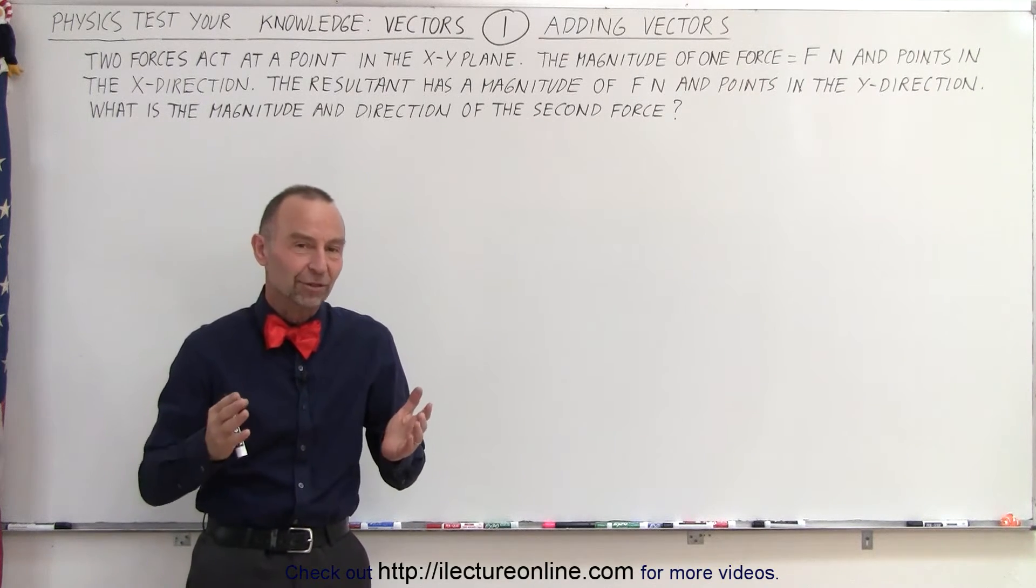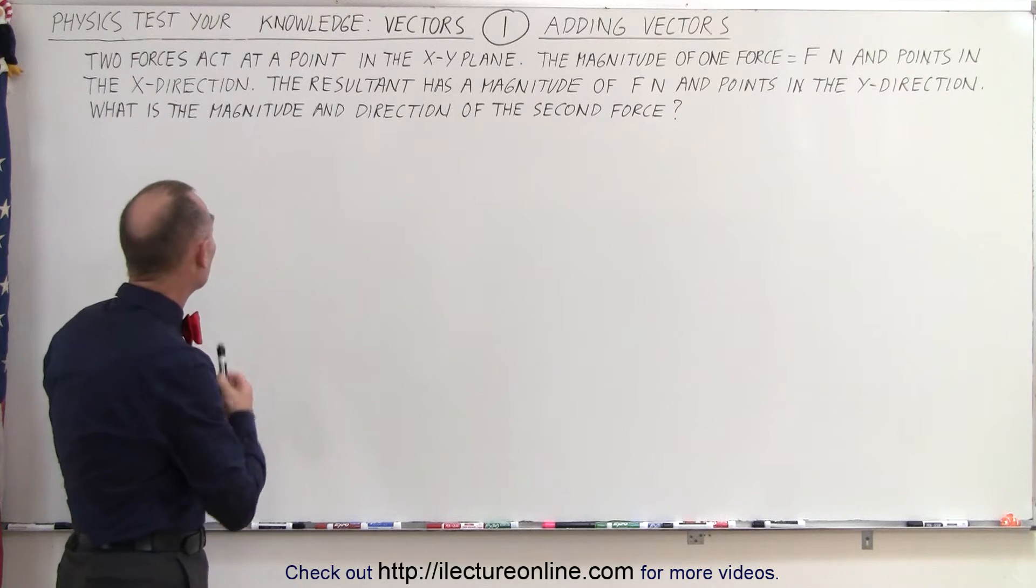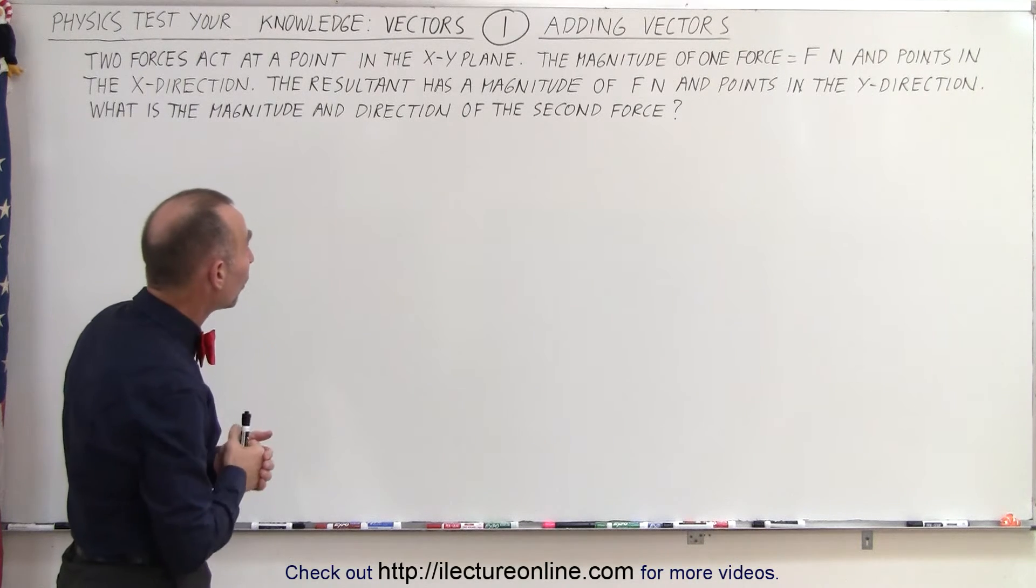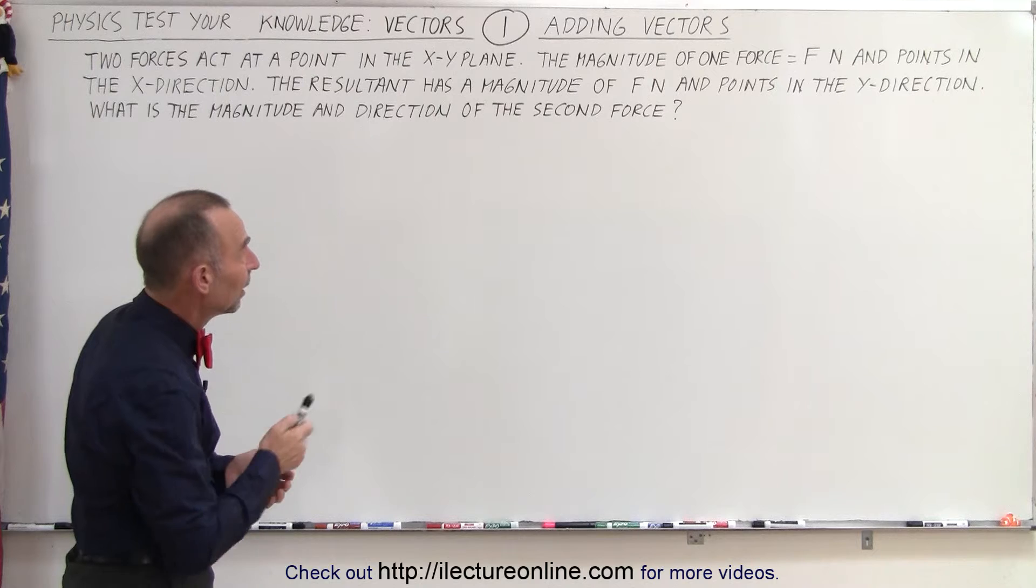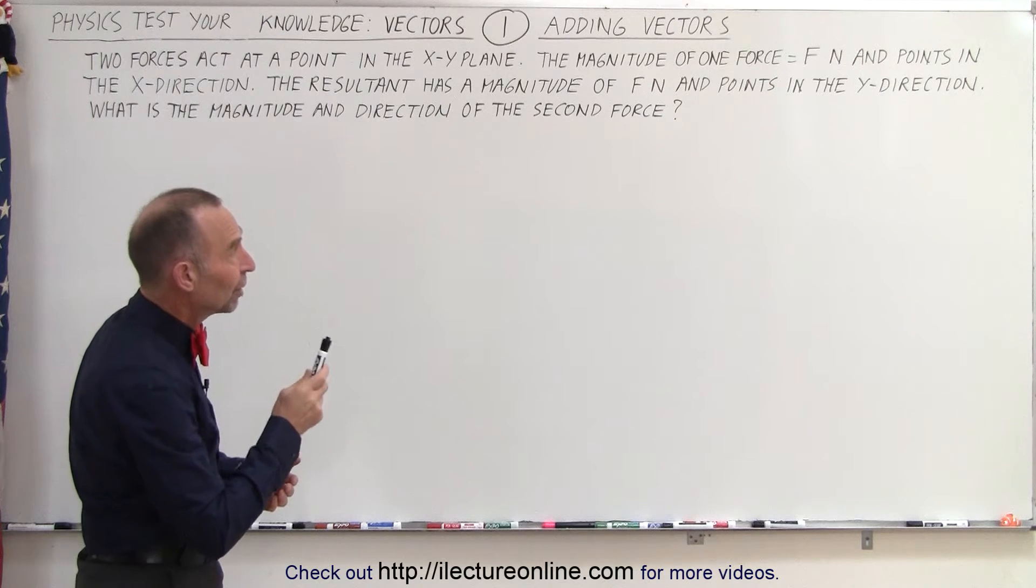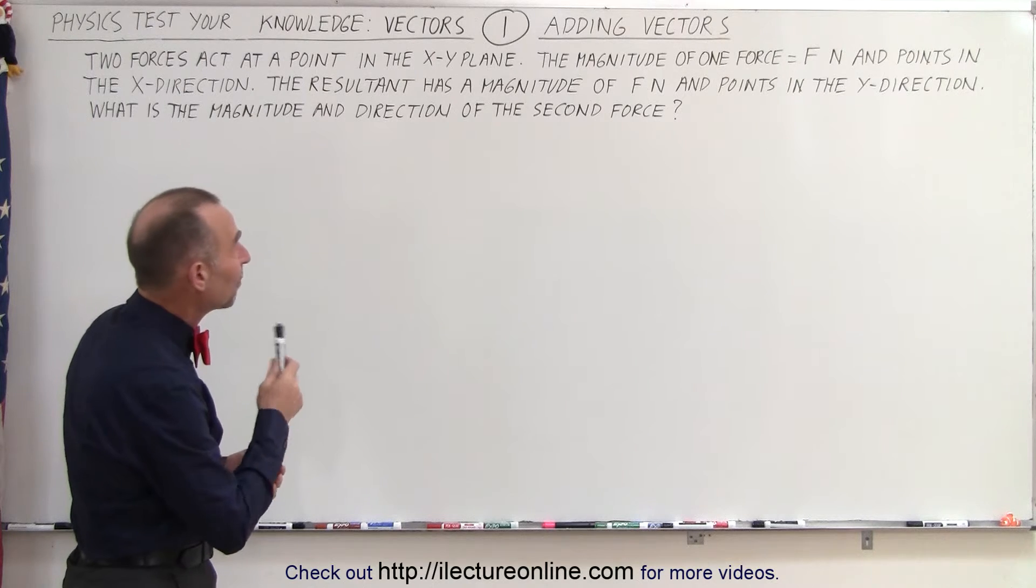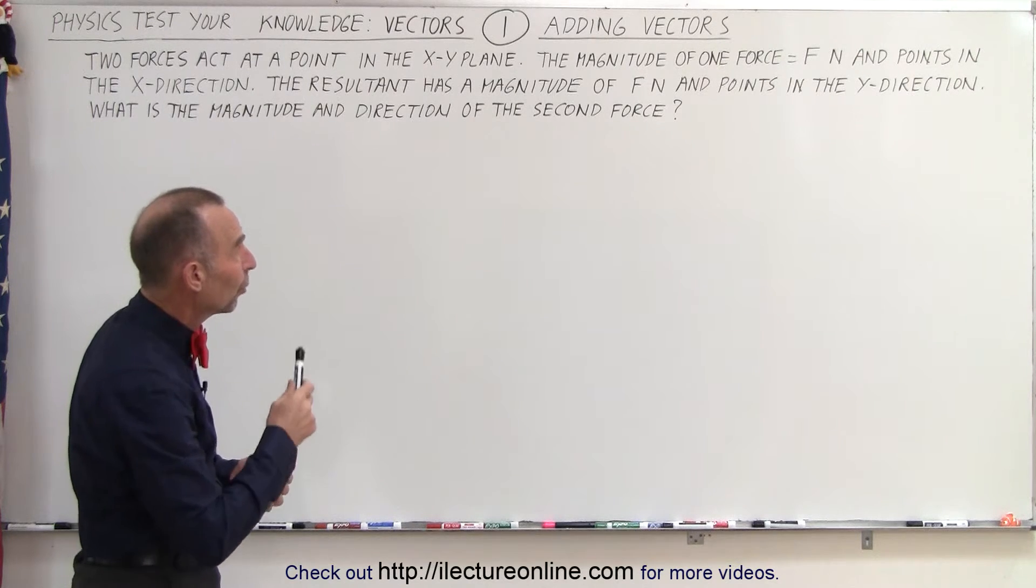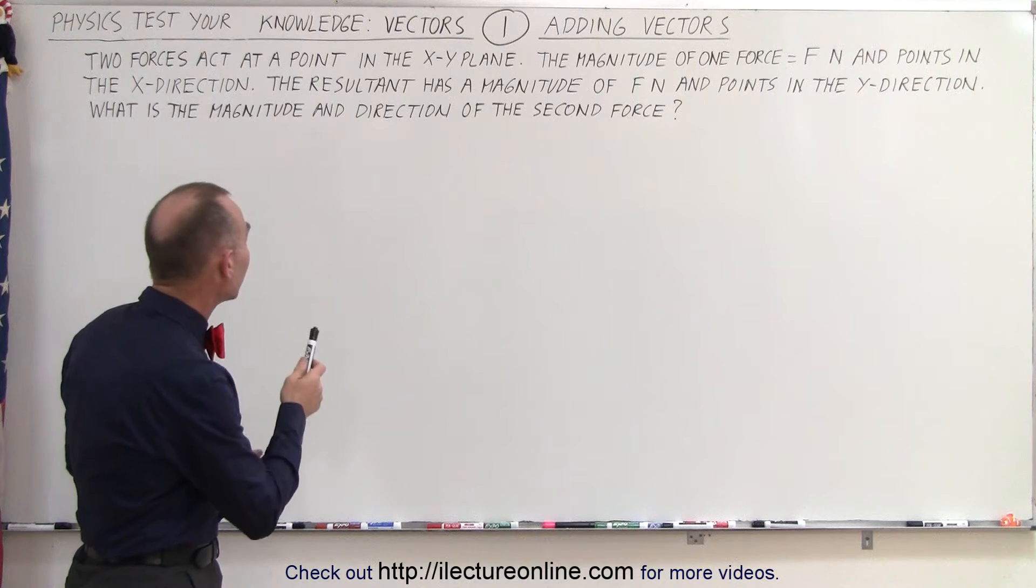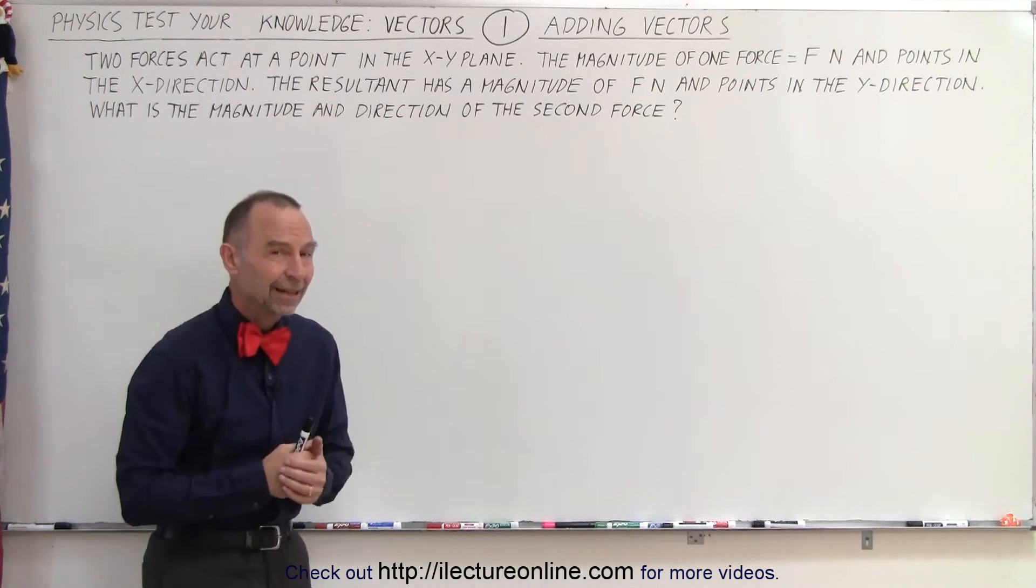We're going to start with vectors. And the question is, if there's two forces acting at a single point in the xy plane, and the magnitude of one force is equal to f newtons and it points in the x direction, and the resultant has a magnitude of f newtons and points in the y direction, what is the magnitude and direction of that second force?